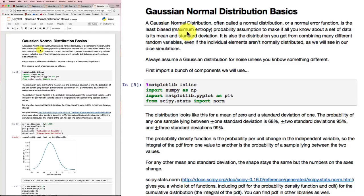So a Gaussian normal distribution, or it's often called a normal distribution or a normal error function, it's the least biased assumption you can make if all that you know about a set of data is its mean and its standard deviation. So it's also the distribution that you'll get if you combine a whole lot of random influences together. So if you roll a whole lot of dice, the results will come up looking a lot like a normal distribution.